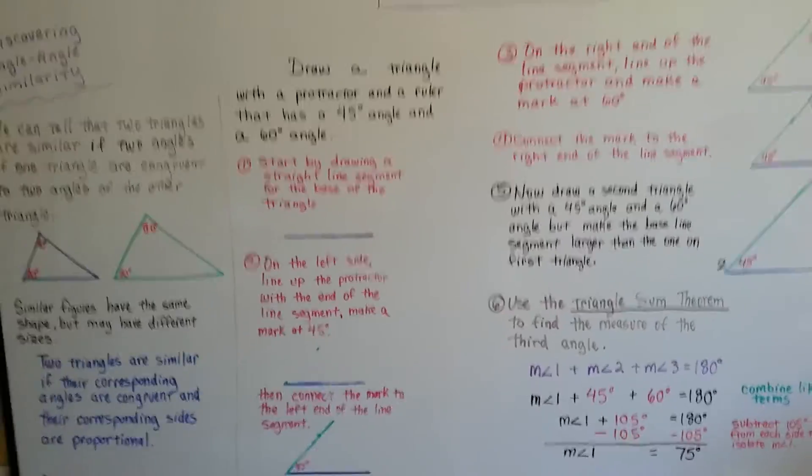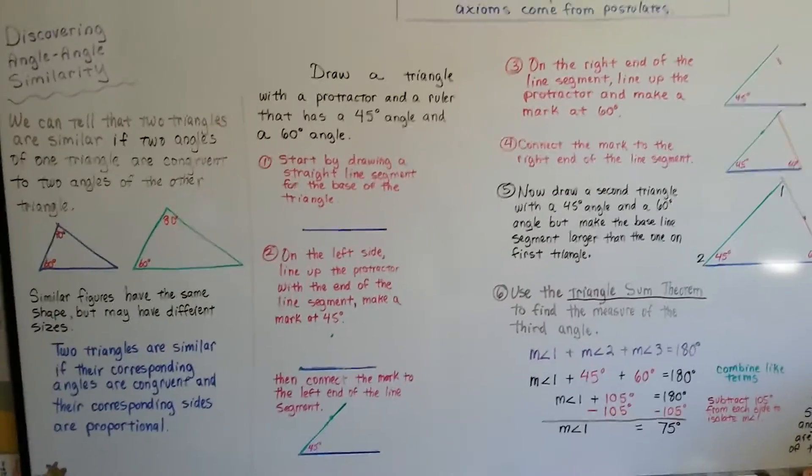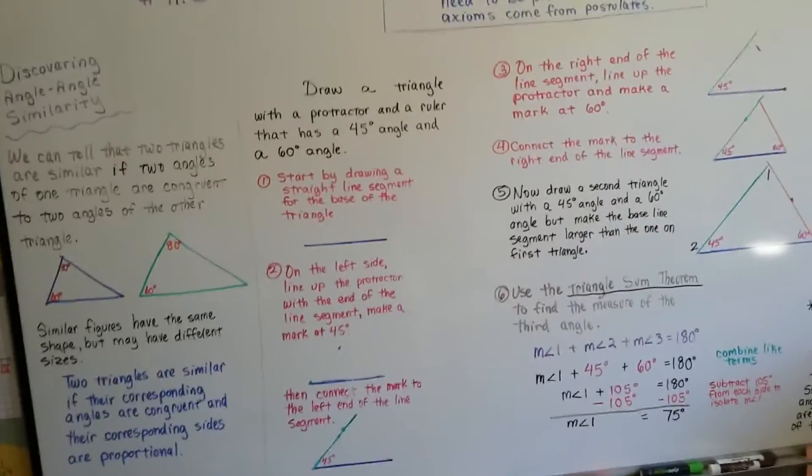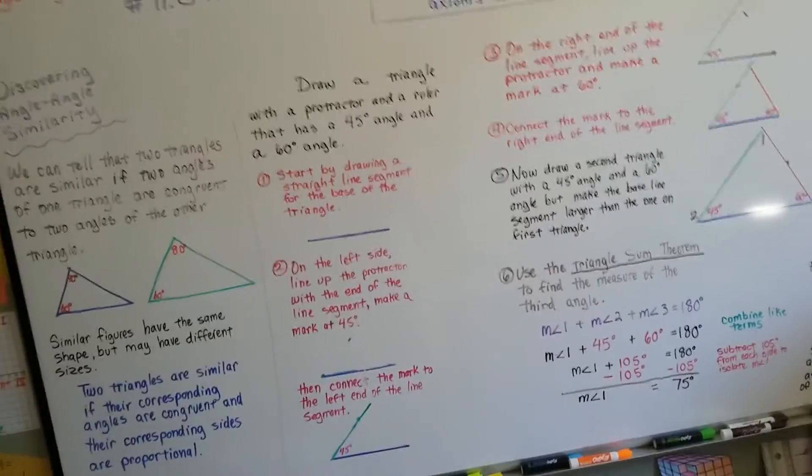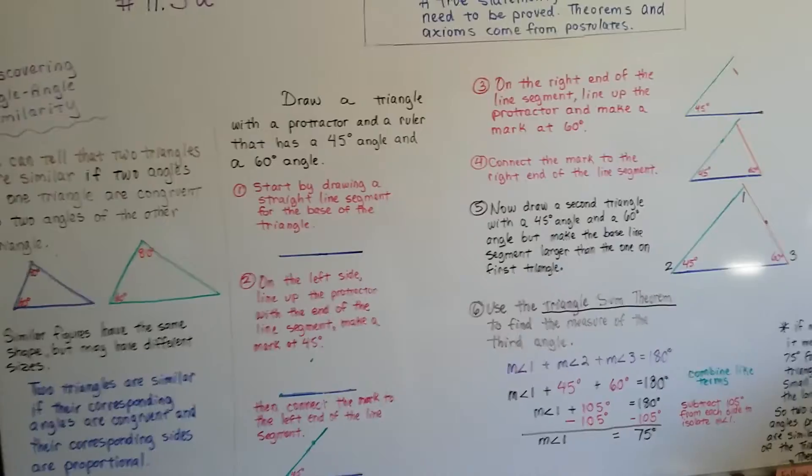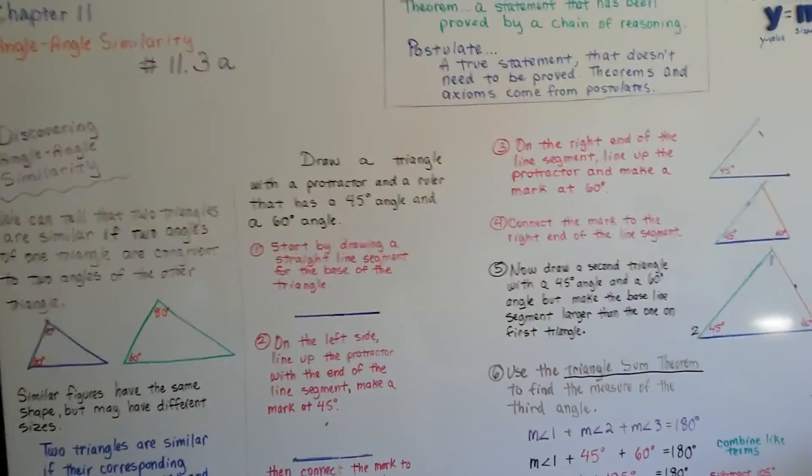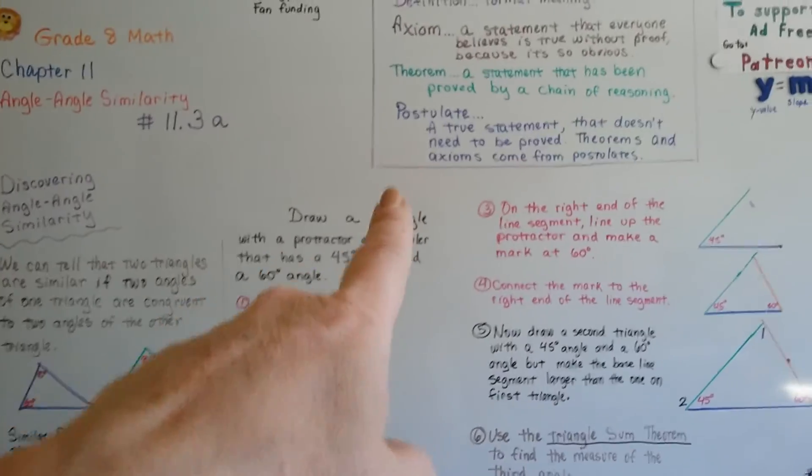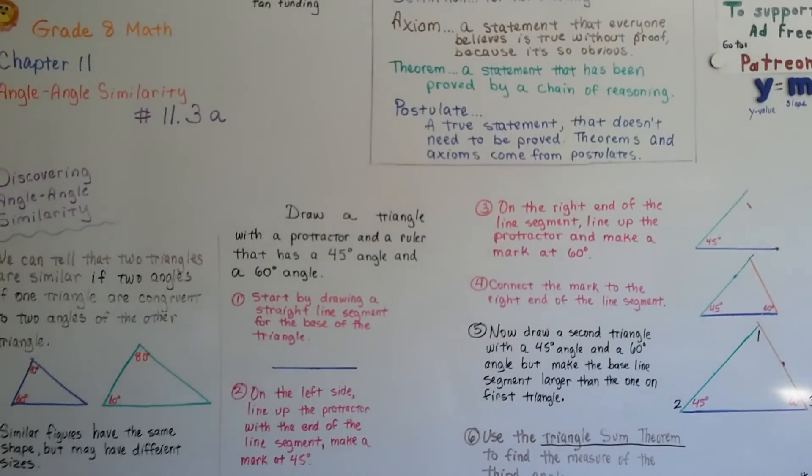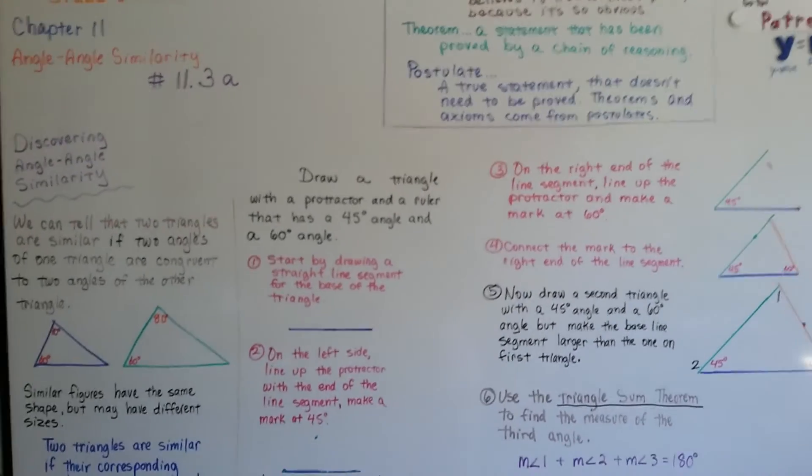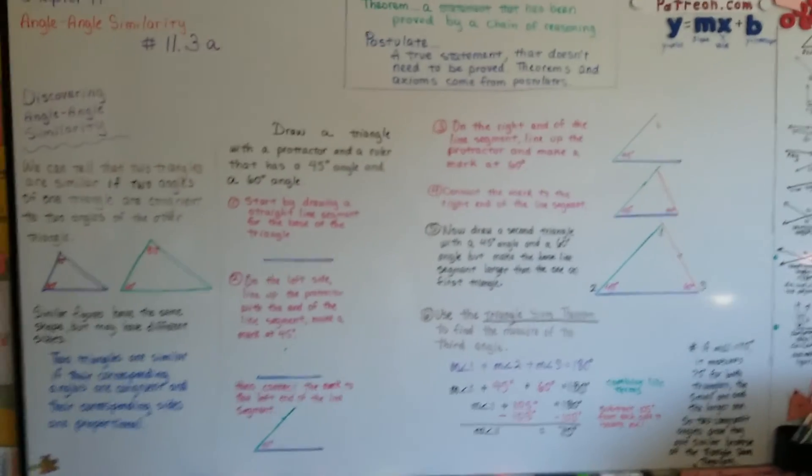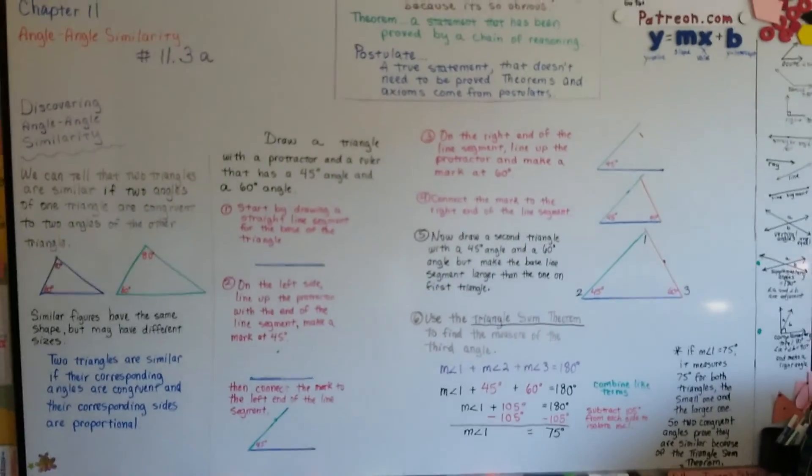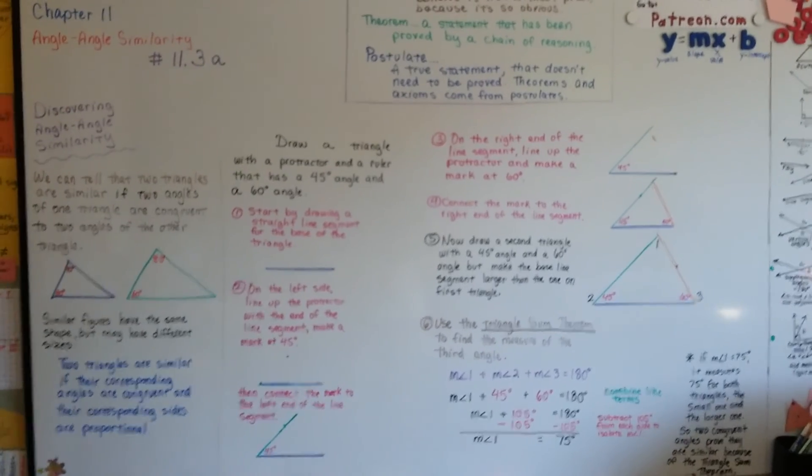Okay, so that's discovering angle-angle similarity. We're going to talk about using the angle-angle similarity postulate in the next video. So remember what a postulate is. It's a true statement that doesn't need to be proved, and theorems and axioms come from postulates. So we'll talk about that more in the next video, 11.3b. I hope to see you there. I hope this was helpful. I hope you're doing okay. Bye.